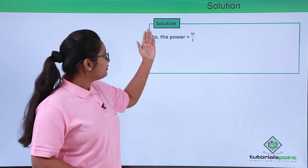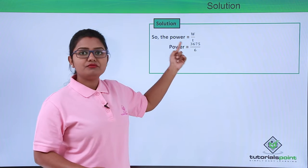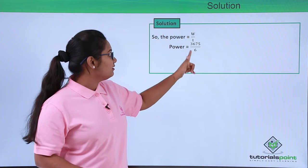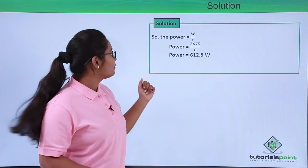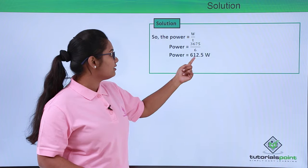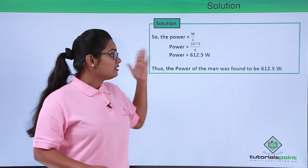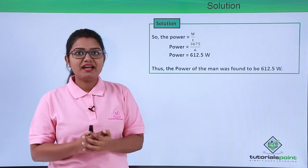So let's do that. We have the formula for power to be work done divided by time taken. We have work done to be 3675 and the time he has taken to do this amount of work is 6 seconds. So the power turns out to be 612.5 watts. So the power of the man was found to be 612.5 watts.